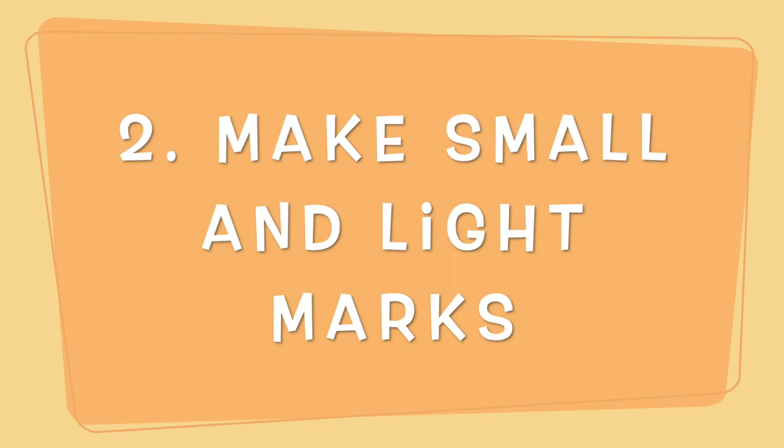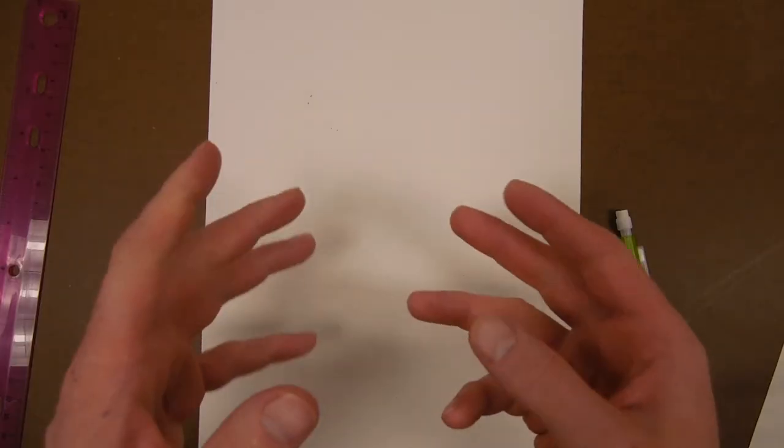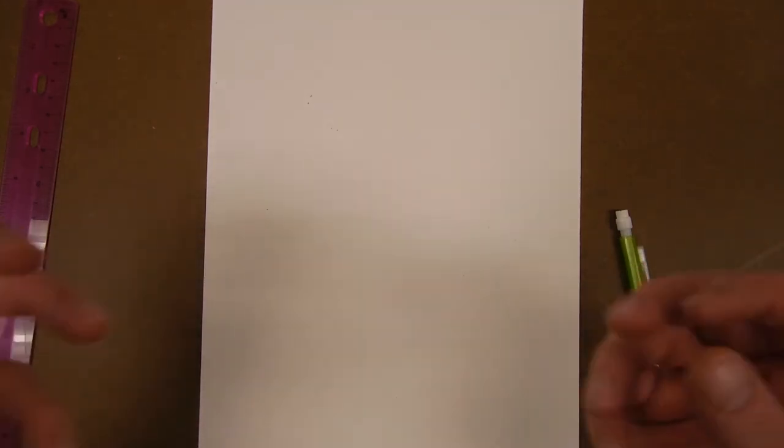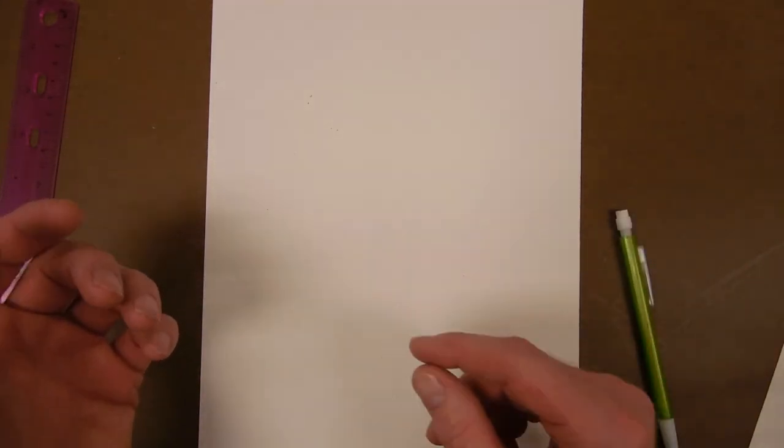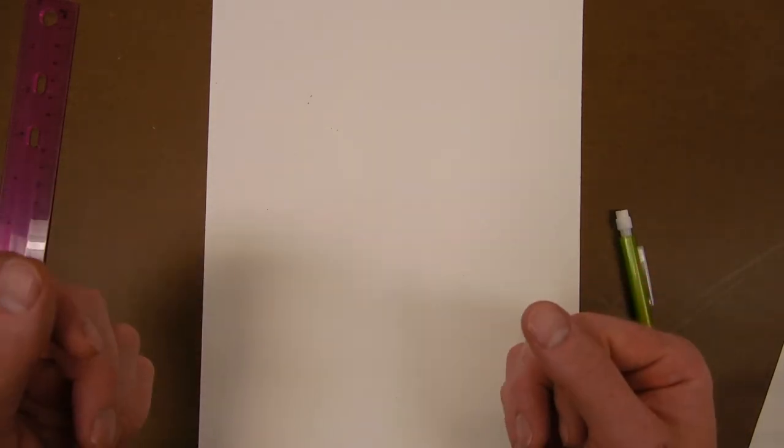Rule number two. Make small and light marks. I cannot stress this enough. If you're making super dark marks, you won't be able to get rid of them. Maybe for this project that doesn't matter, but for projects later down the road, you'll want to be able to erase these lines. So make sure you're doing them lightly.